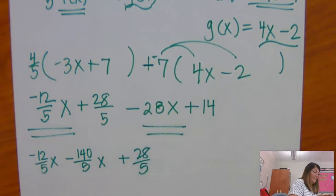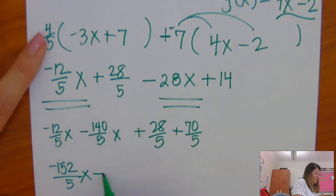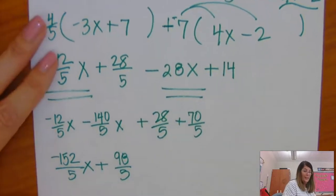Plus, 28/5 and 14 times 5 is 70/5. Now, -152/5 x plus 98/5. That's my answer.